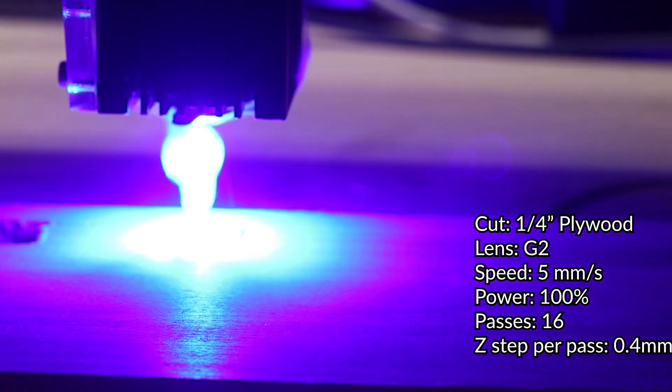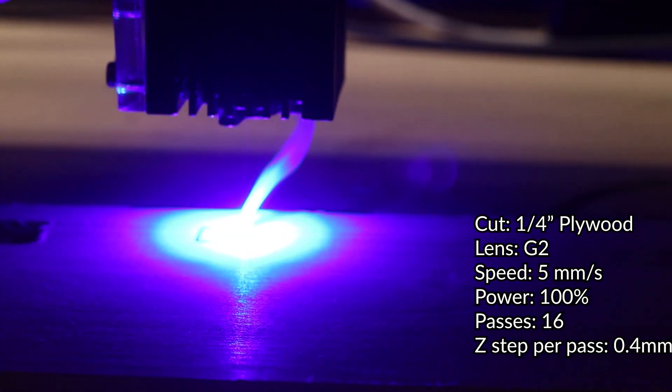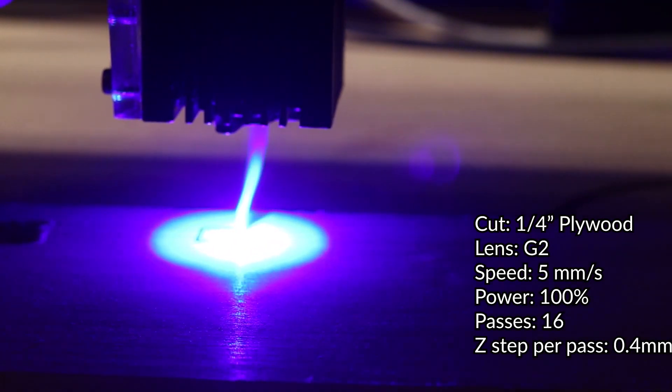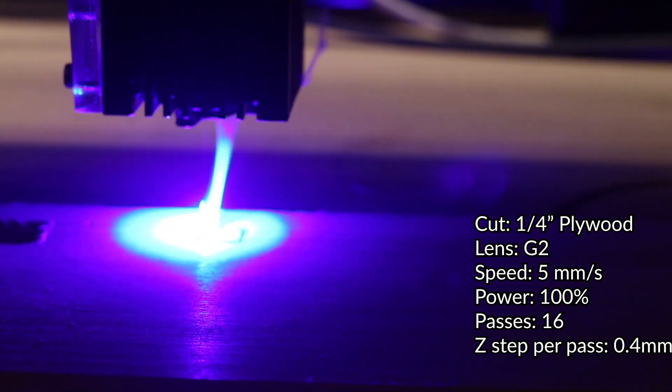So next is 1/4 inch plywood. For this job I did end up raising the number of passes and increasing the speed. What we got was a lot less darkening of our top layer.